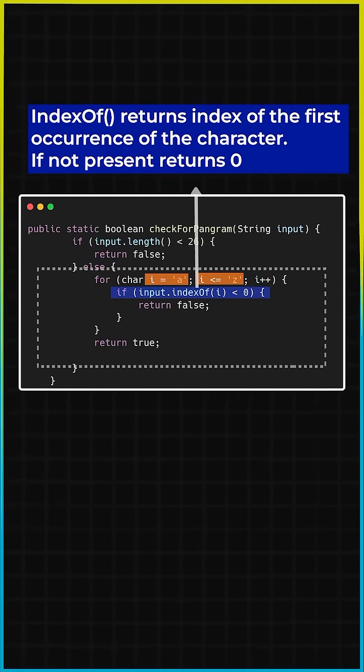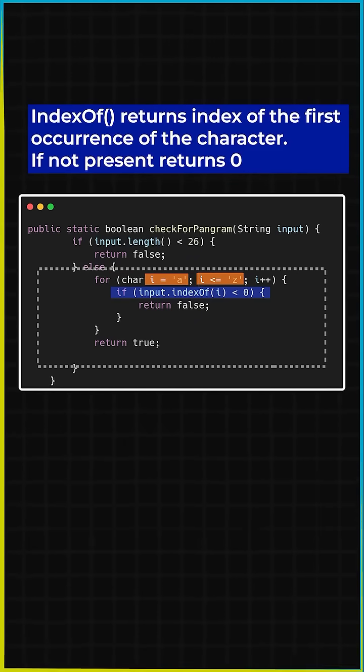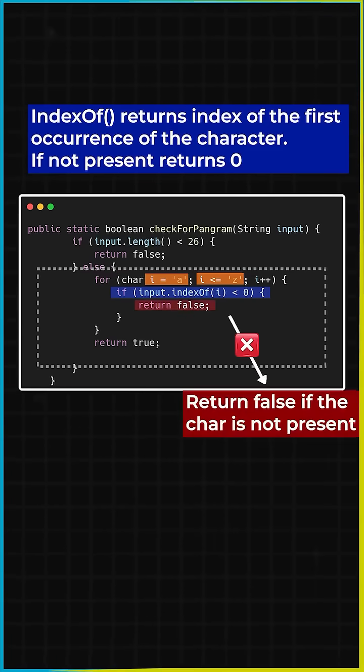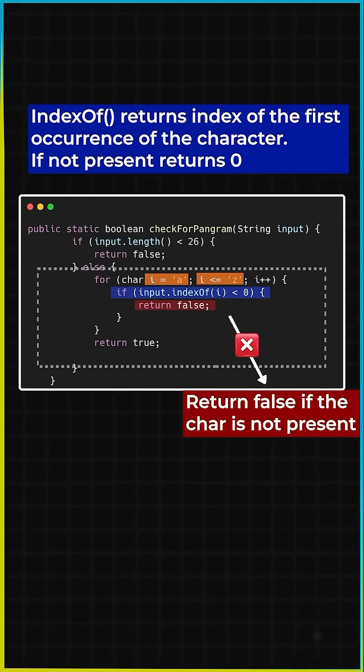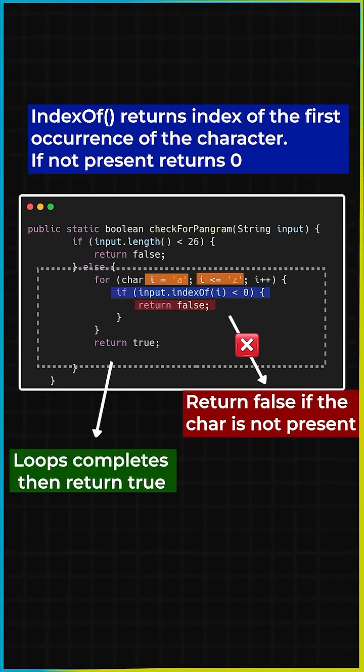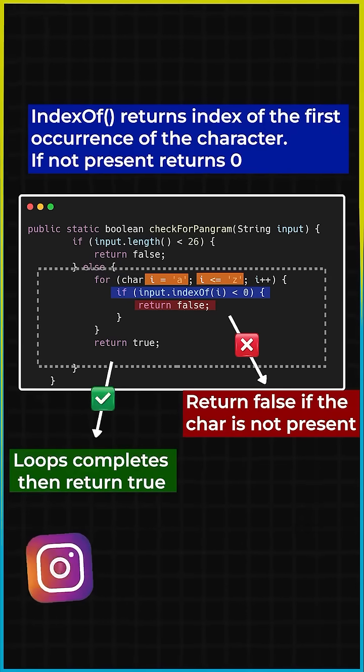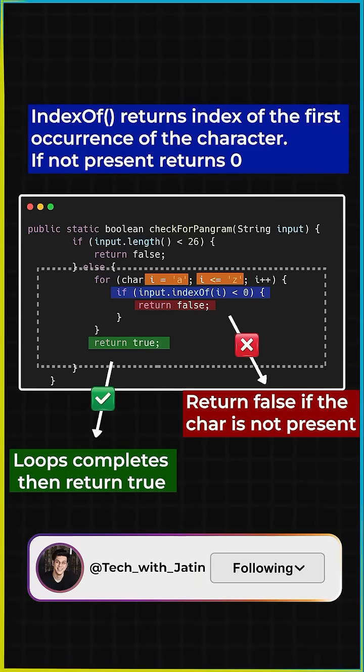If the index is less than zero it means that the character is not present and hence we would return false again. If the loop completes without returning false it means all the letters are present and hence this string is going to be a pangram, so we would return true and we are done.